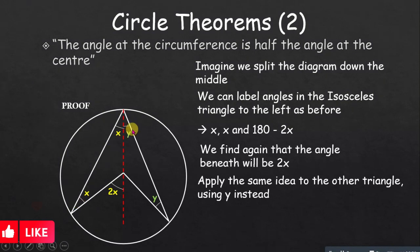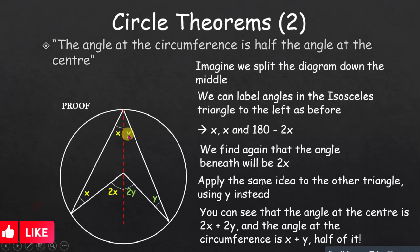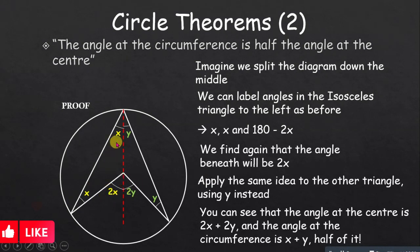Applying the same reasoning to the right triangle: label the base angles y and y, so the central angle contribution is 2y. The total angle at the center is 2x plus 2y. The angle at the circumference is x plus y, which is exactly half of 2x plus 2y. Dividing the center angle by 2 gives the circumference angle — proving the property.